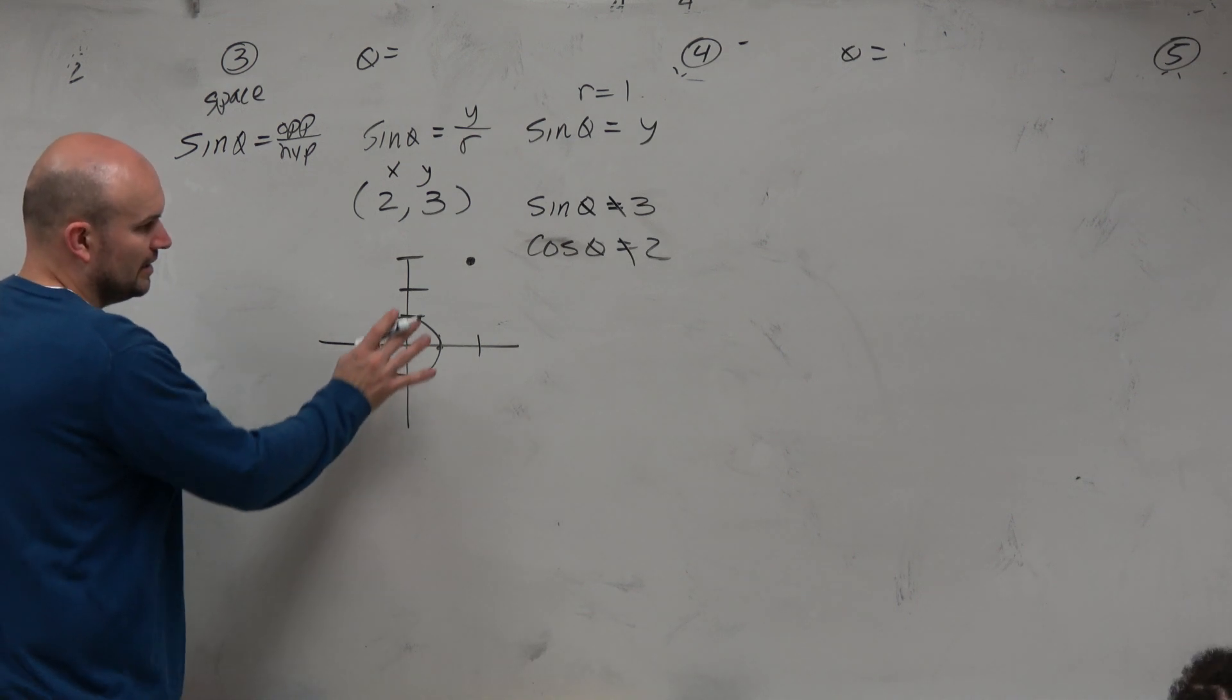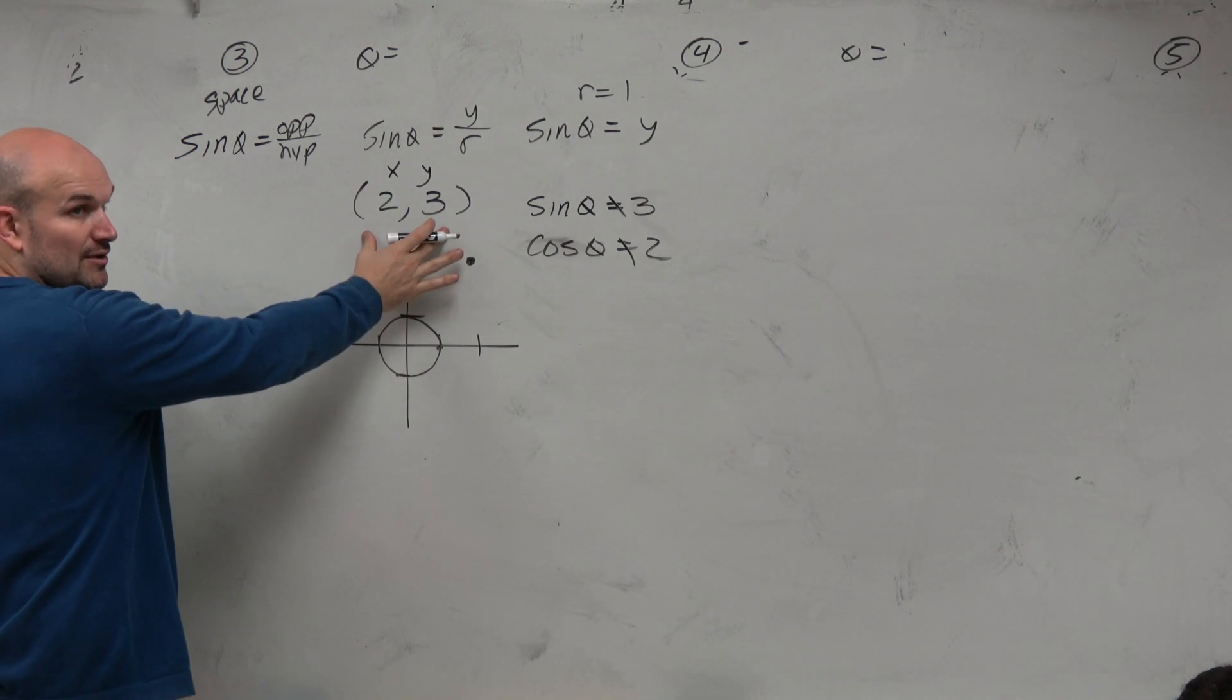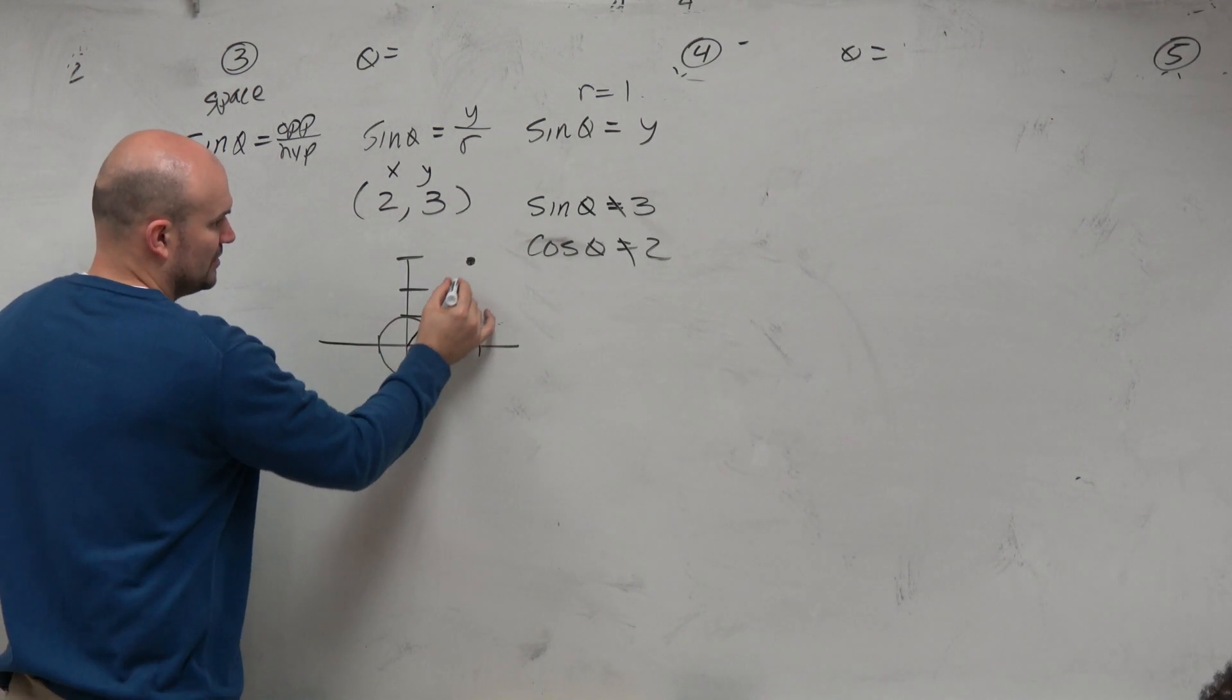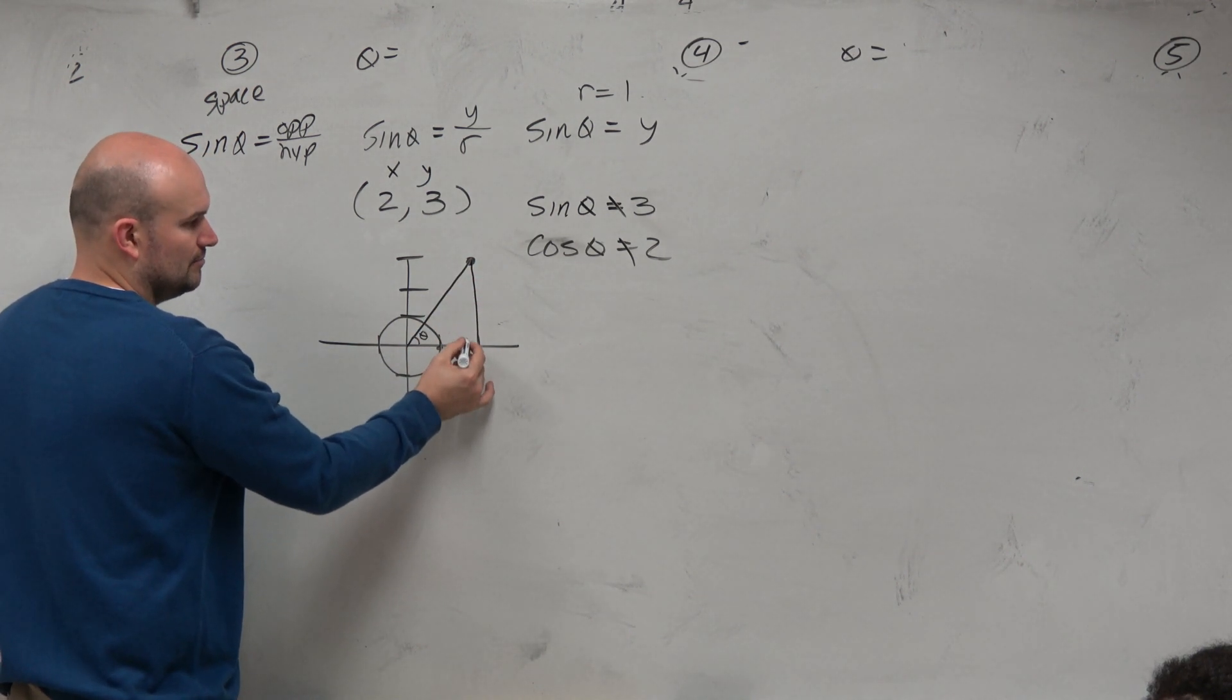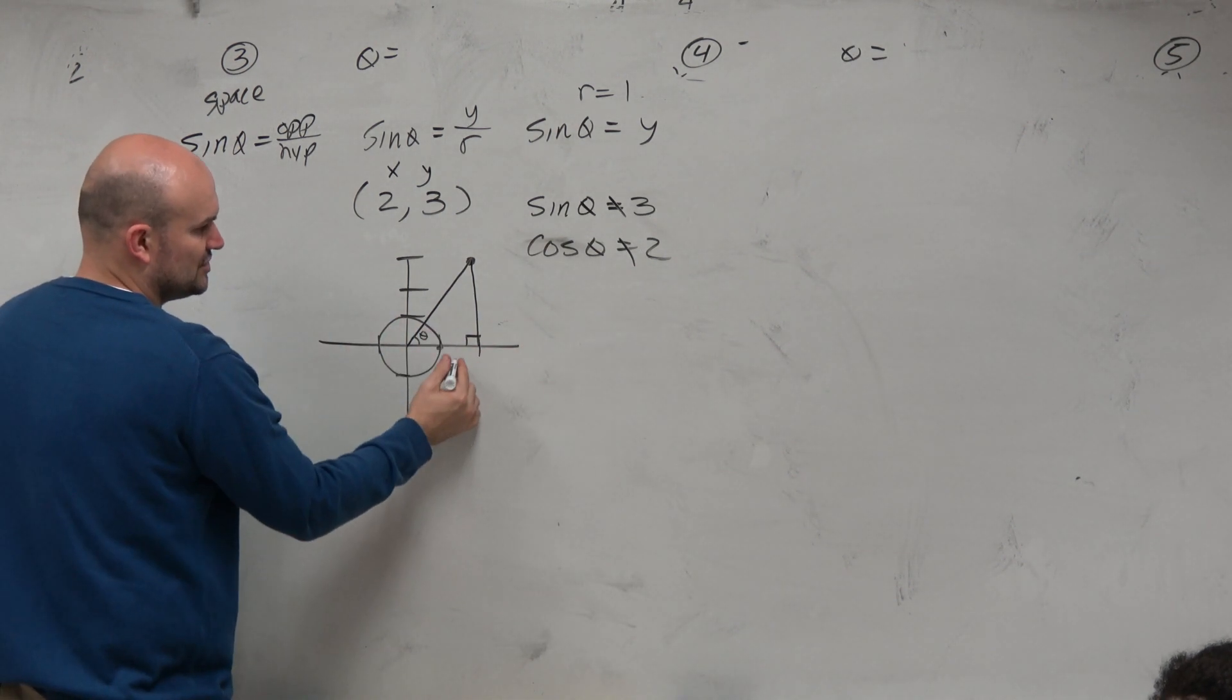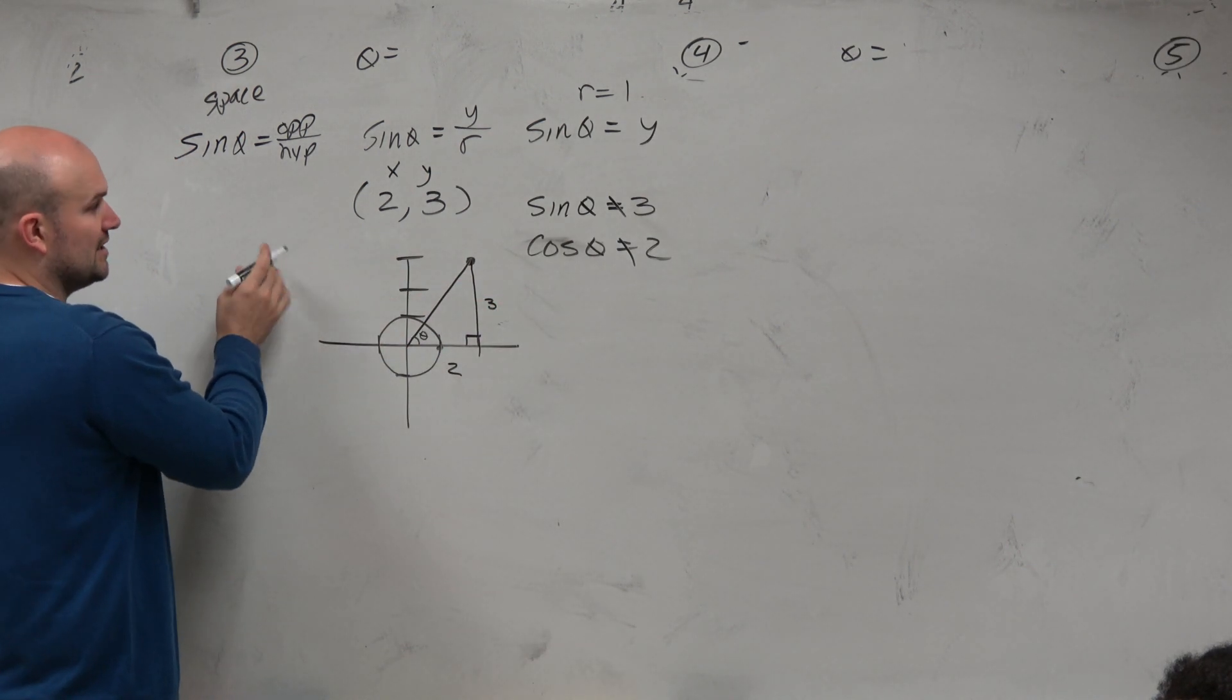So if we have a point not on the unit circle, and we need to evaluate the six trigonometric functions, last class period what we did was we created our central angle, and then we drew a right triangle perpendicular to the x-axis. We knew that this distance here was 2, this distance was 3.